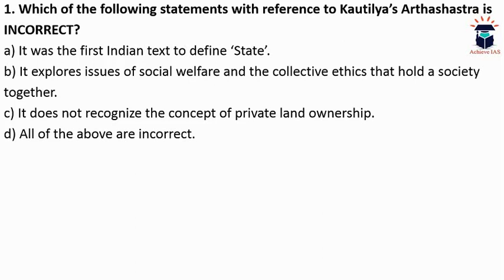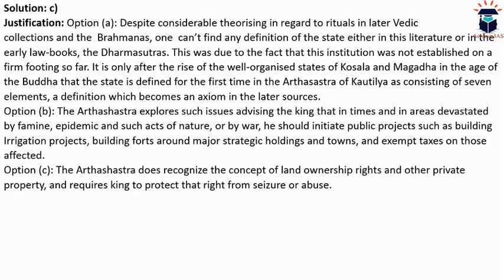Option B is also correct because the Arthashastra says that when any natural calamity or enemy invasion takes place, or when subjects are in difficulty, the king must initiate public welfare measures — such as distributing food, building irrigation projects, constructing forts around strategic holdings and towns, and exempting taxes in affected areas.